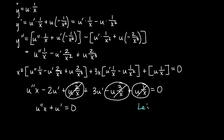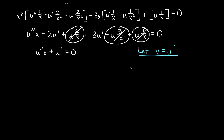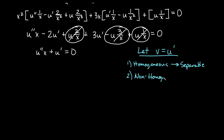This is where we reduce the order. Once we've gotten rid of all u terms, we let v equal u prime. A couple of things can happen: if you started with a homogeneous equation (right side equal to zero, as we did), this substitution will make it a separable first-order equation. If you started with a non-homogeneous equation, it will become a first-order linear equation requiring an integrating factor. Since v is u prime, u double prime becomes v prime, giving us v prime times x plus v equals zero.